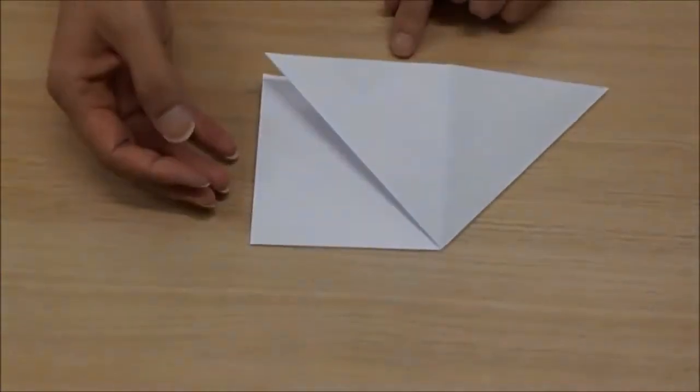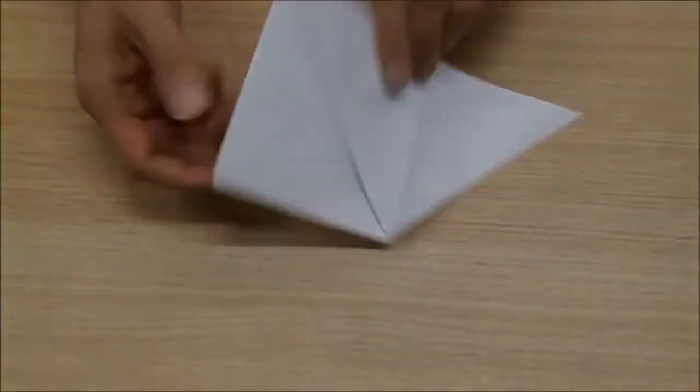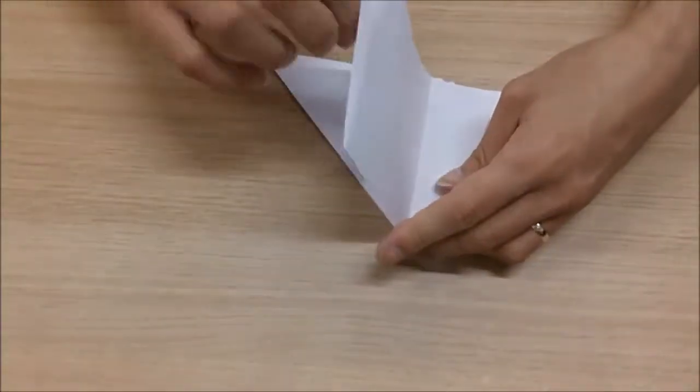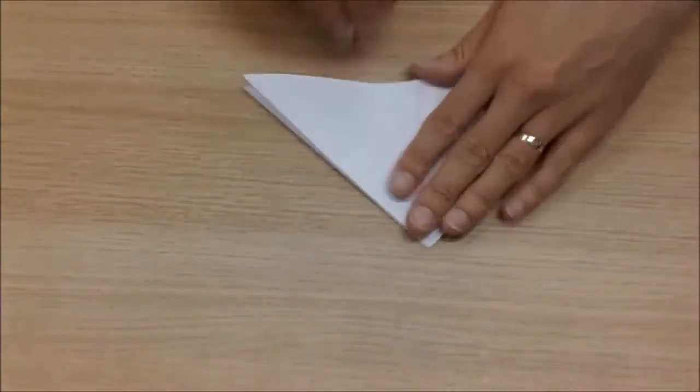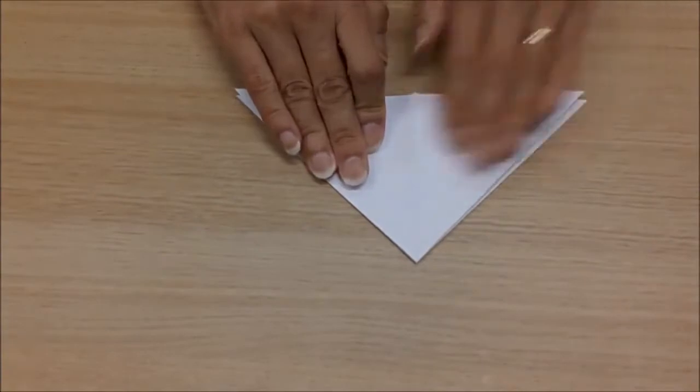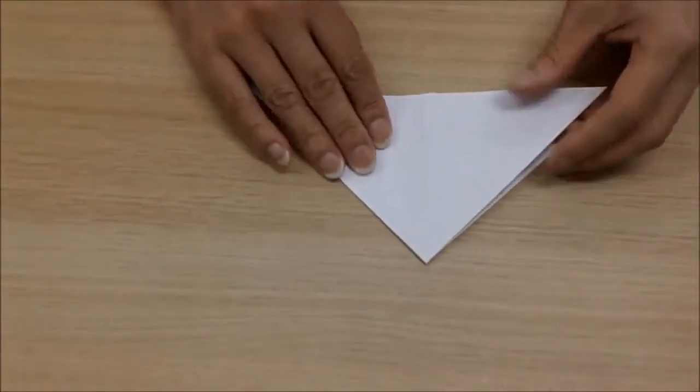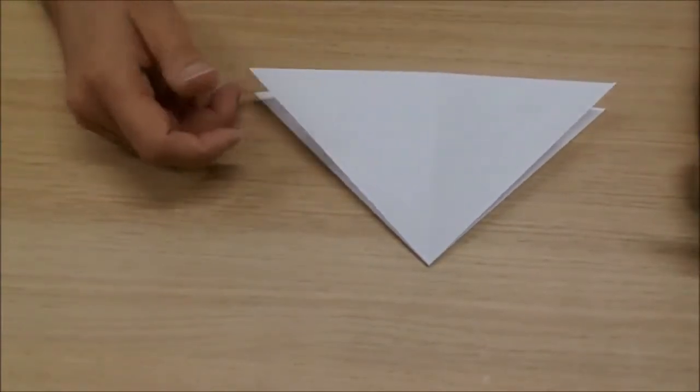Like so. Turn it over and we do exactly the same on the other side. We fold into a triangle. This is what we call, in the origami world, a waterbomb base.